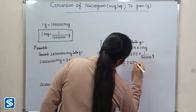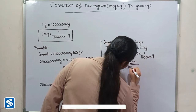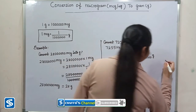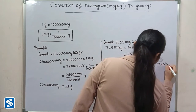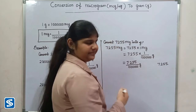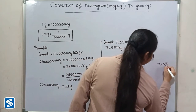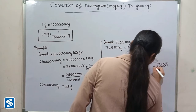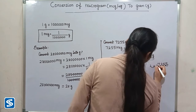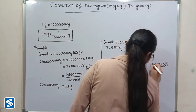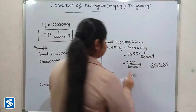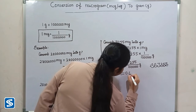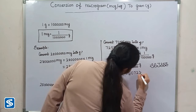The easy way to divide by one million is to move the decimal point six places to the left: one, two, three, four, five, six. Now we have to fill zeros in the empty spaces. When we divide seven thousand two hundred and fifty-five by one million, our answer will be zero point zero zero seven two five five grams.